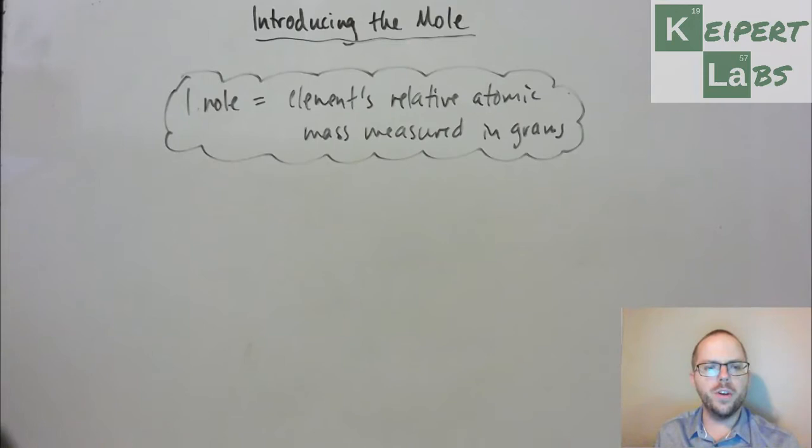So we can take that element and we can measure it out in grams and we can be confident knowing that we have the right number of particles. Now, originally, chemists didn't know how many particles that was, in the same way that when you did the relative mass activity, you didn't know how many pieces were in the vial, but it didn't matter as long as you knew that they was the same number, because then you could compare them.